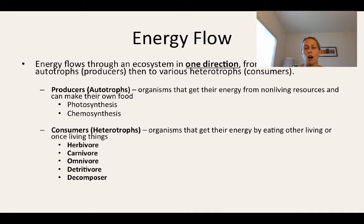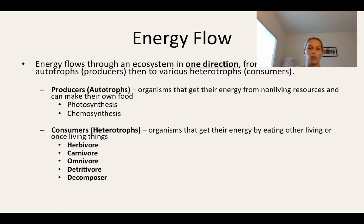The energy from autotrophs, our producers, is then passed on to consumers or heterotrophs — organisms that get their energy by eating other living or once-living things. There are different types of consumers. Herbivores eat only plants, so things like rabbits or deer, for example.